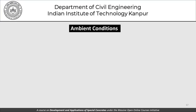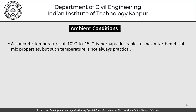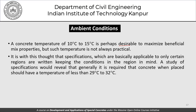A concrete temperature of 10 to 15 degrees Celsius is perhaps most desirable to maximize the benefits of mix properties, but it may not always be achievable. Specifications applicable to certain regions are written with regional conditions in mind. Generally, it is required that concrete when placed should have a temperature of less than 29 to 32 degrees Celsius. I encourage you to find out what the maximum permitted concrete temperature for a pour in India is.